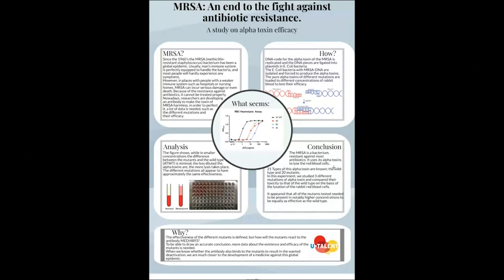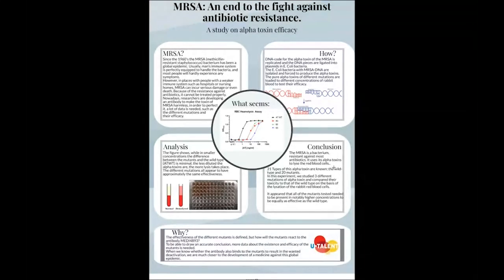In total, 21 different MRSA mutants exist, all with small differences in structure and efficacy. The MRSA bacteria produces proteins, among them the one this study focuses on: alpha toxin, or HLA. This protein punctures red blood cells, causing them to die. MRSA attaches itself to a pure lipid target membrane where a heptameric complex forms, making a water-filled channel in the membrane. This channel allows molecules to flow into or out of the cell, causing the cell to either shrink or explode, starting emergency reactions such as apoptosis and causing significant energy loss.